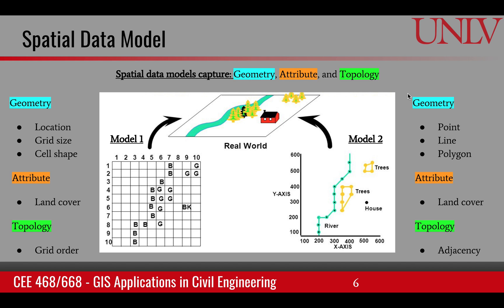Going back to the spatial data model: now we know that location is an important piece. When capturing real-world spatial data, we use three features: geometry, attribute, and topology.